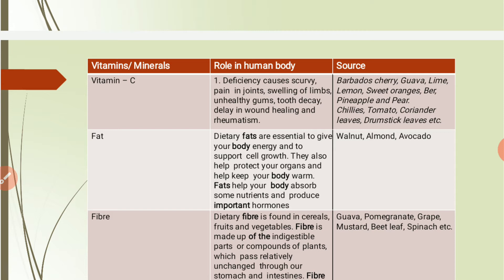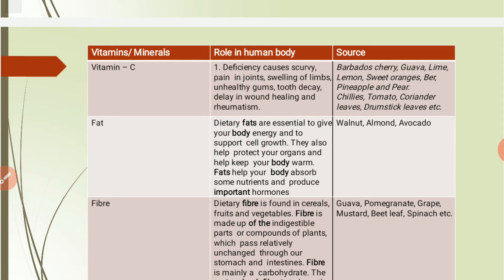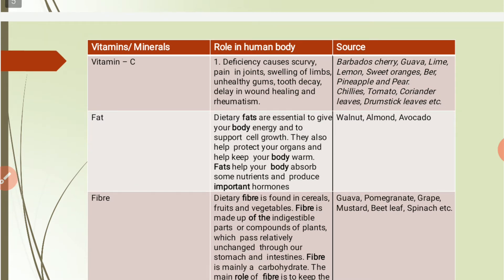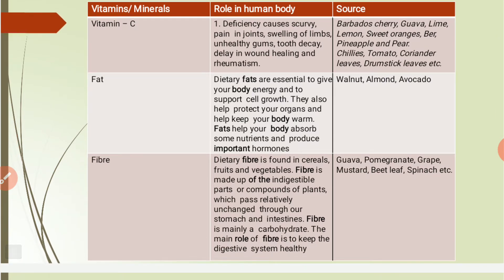Dietary fats are essential to give the body energy and to support cell growth. They help protect your organs and keep the body warm. Fats also help the body absorb some nutrients and produce important hormones. Sources of dietary fats include walnut, almond, and avocado.